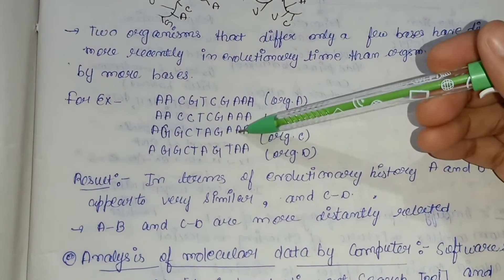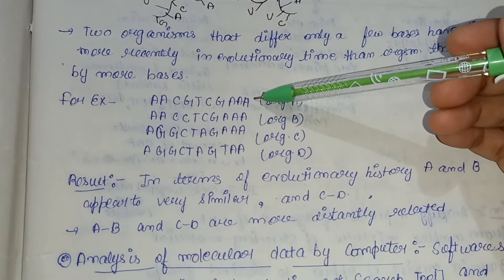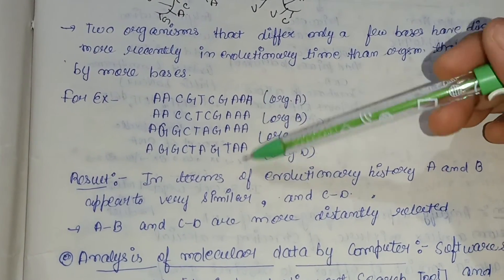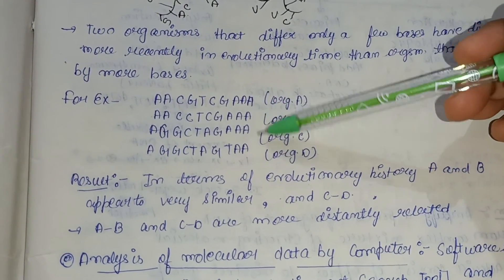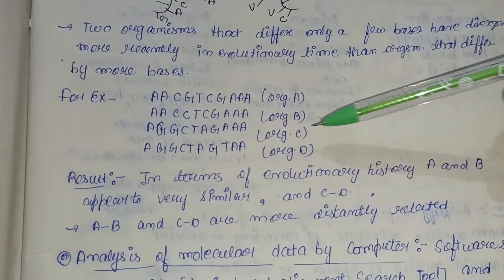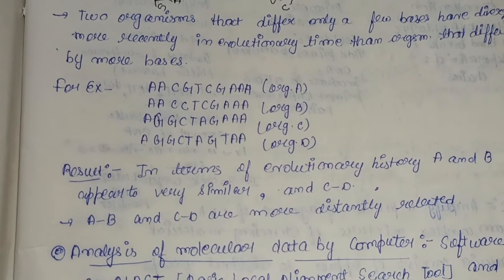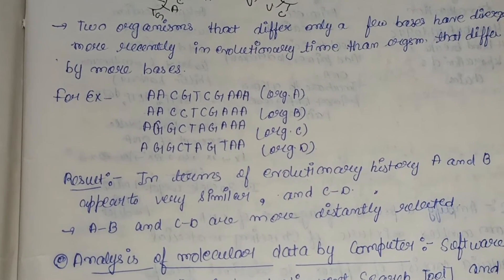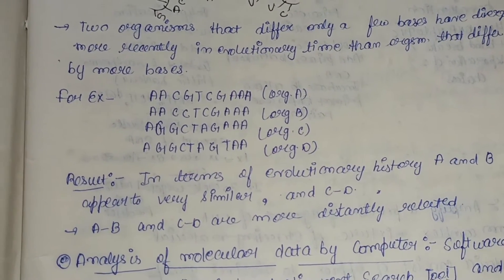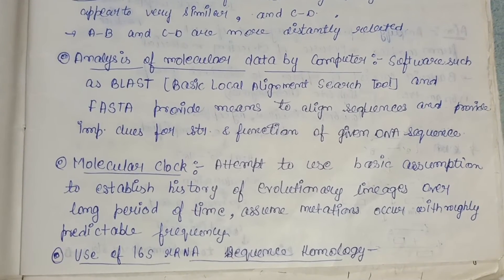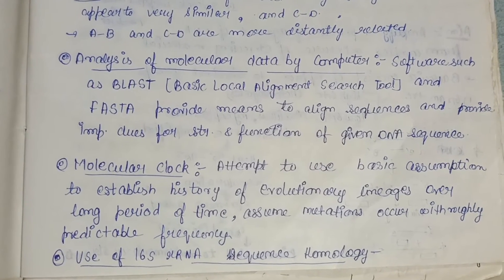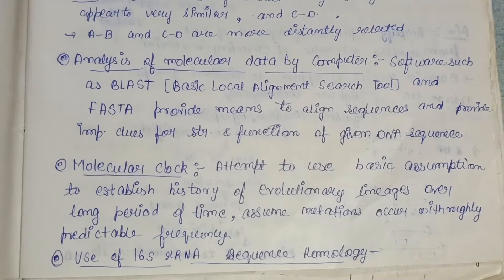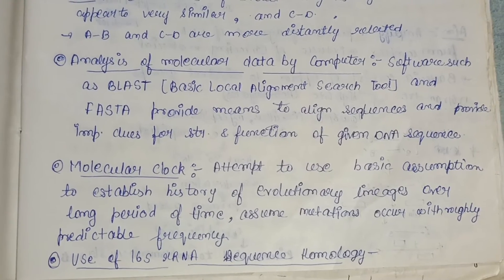C and D are quite similar to each other, while A and D are very distant from each other. This comparison shows their phylogeny and evolutionary history through the use of molecular sequences.